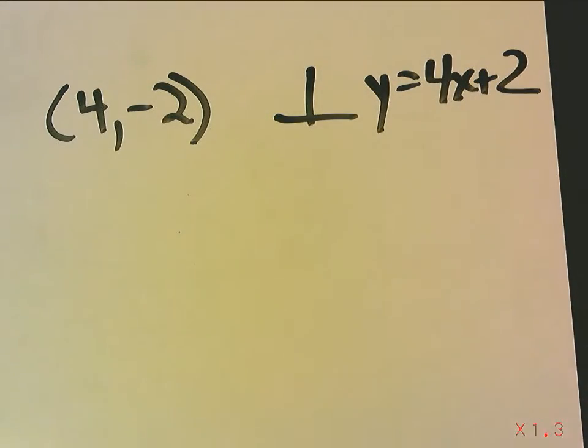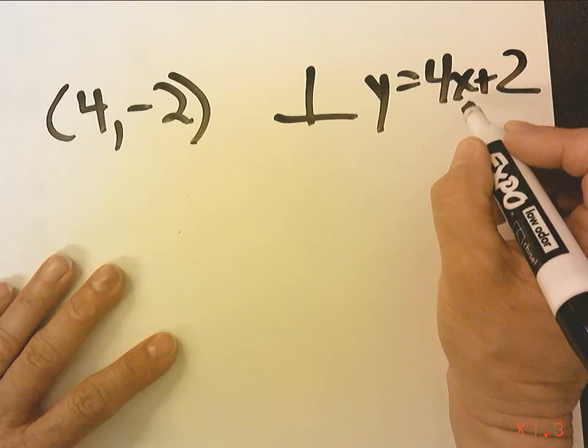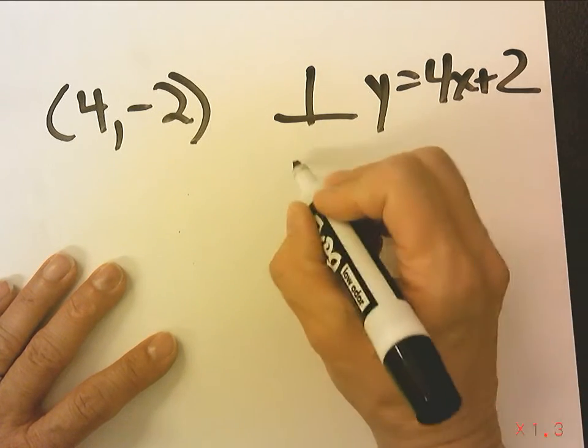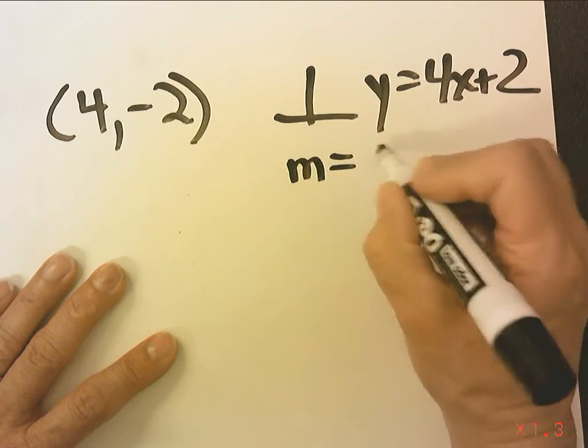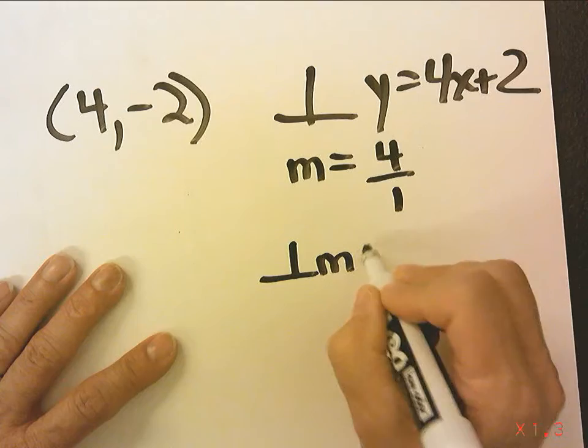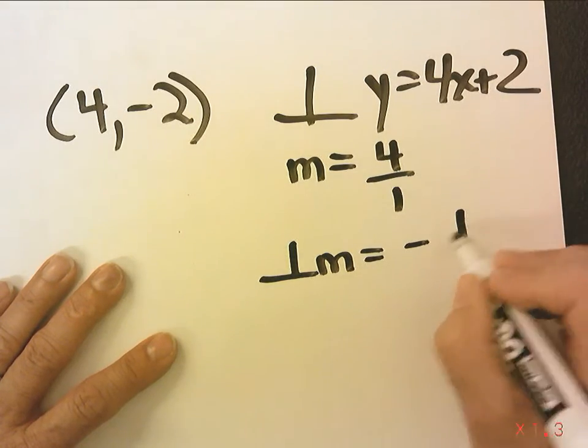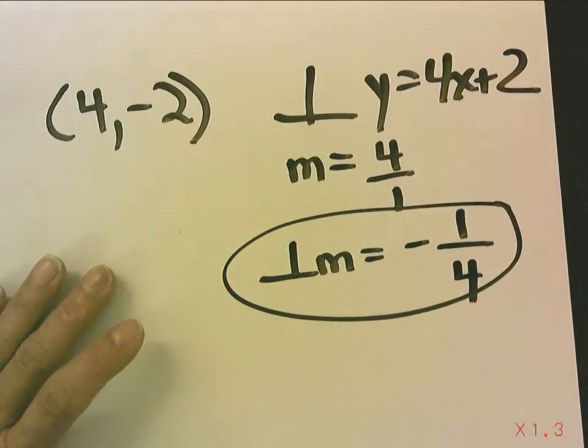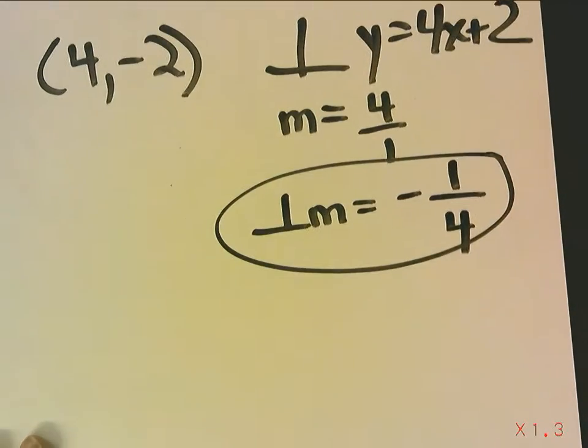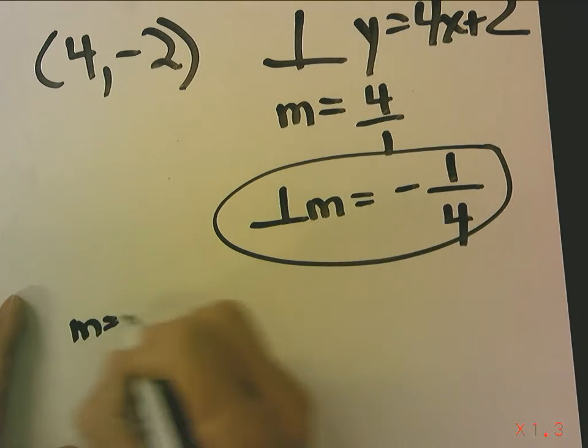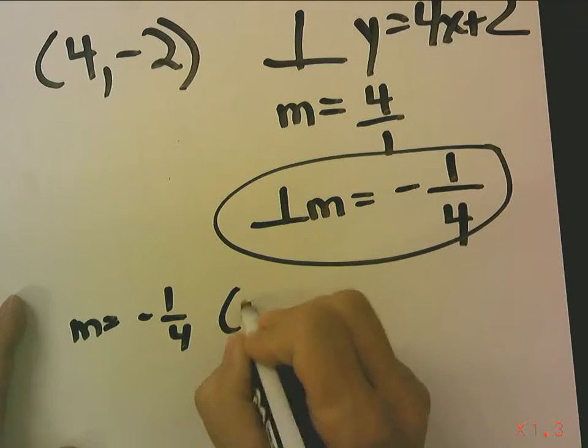Now if a line is perpendicular, then it has the opposite reciprocal slope. So first we determine this slope, which is 4 over 1. The opposite reciprocal would be negative 1 over 4. So we are looking for an equation that has a slope of negative 1 over 4 but goes through this point.